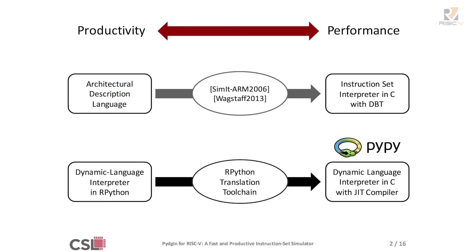Rather, PyPy uses a reduced subset of Python called RPython. The difference between RPython and Python is mostly that you can do type inference over RPython. They also developed a translation toolchain called the RPython Translation Toolchain, which automatically translates RPython source into C and compiles it. In addition, it also gives you a just-in-time compiler pretty much for free.